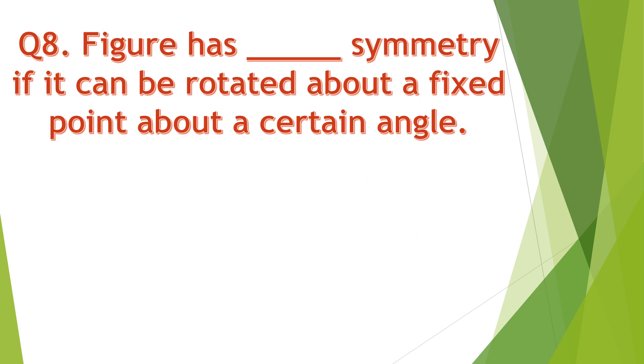Question number 8. A figure has dashed symmetry if it can be rotated about a fixed point by a certain angle. Your time starts now.